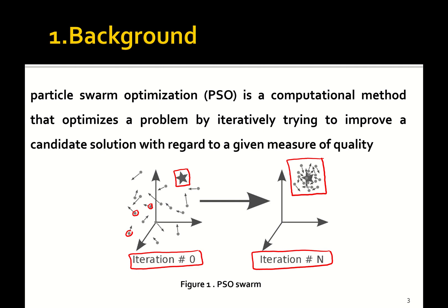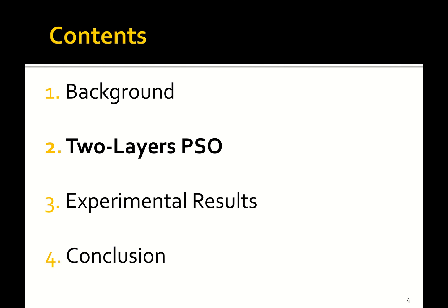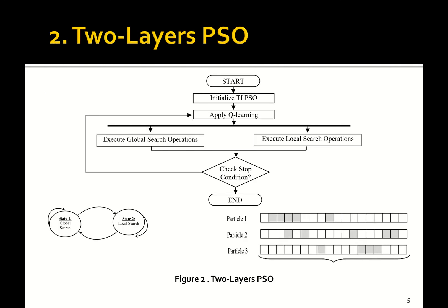In order to improve the standard PSO, we are proposing a two-layer PSO optimizer. As shown in the flowchart, the key idea of the two layers is that we have two different layers for the search: a global search layer and a local search layer. To select between these layers, we use the Q-learning algorithm, which is related to the field of reinforcement learning.